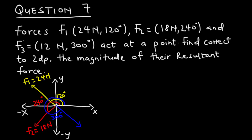We are asked to find the resultant force of three forces: F1 at 24 newtons 120 degrees, F2 at 18 newtons 240 degrees, and F3 at 12 newtons 300 degrees, if they act at a point. We are asked to find, correct to two decimal places, the magnitude of their resultant force. To solve this problem we need to have a graphical representation of the individual forces.